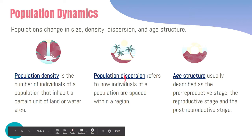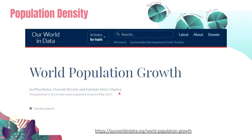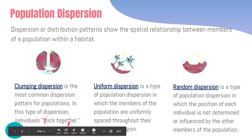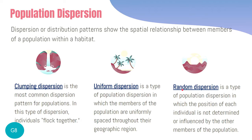The next concept is population dispersion, which tells us how individuals of a population are spaced — how they are distributed within a region. There are three major types of population dispersion showing the spatial relationship between members of a population within a habitat. In clumped dispersion, organisms tend to flock together — this is the most common pattern. In uniform dispersion, individuals are equally spaced throughout the region. In random dispersion, organisms do not follow any pattern and settle wherever survival is possible.